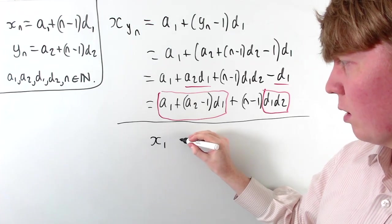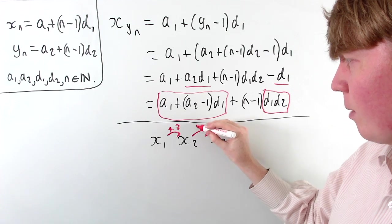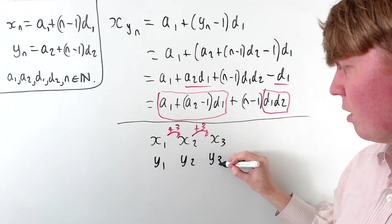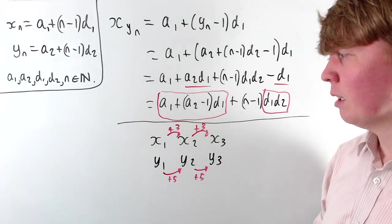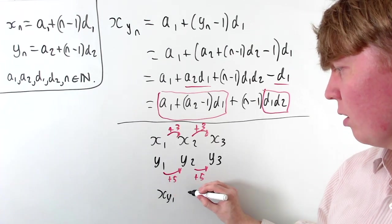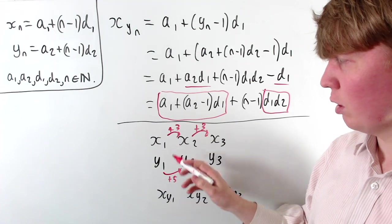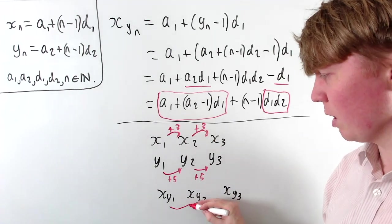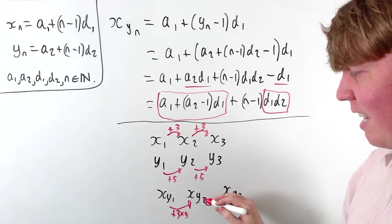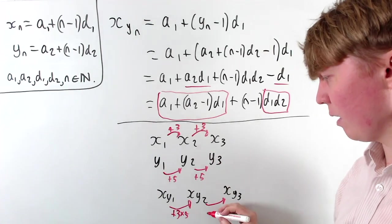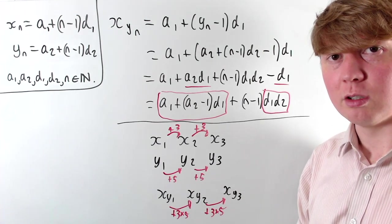It's quite intuitive why the new common difference is the product of the original two. Imagine x_n has common difference 3, and y_n has common difference 5, so d2 equals 5 and d1 equals 3. To go from x_{y_1} to x_{y_2} to x_{y_3}, you're not just going along 3 each time — you go along 3, but you do it 5 times to move from term to term in this subsequence. So you add 3 five times, giving plus 3 times 5. This is why the new common difference is the product d1 times d2.